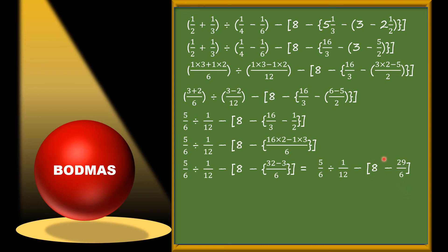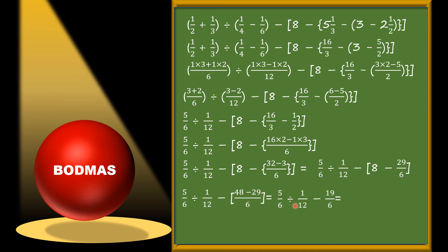Now only the big bracket remains. We need to subtract a fraction from a whole number — 8 minus 29/6. The LCM is 6, so we get (8×6 − 29)/6 = (48 − 29)/6. Our expression becomes: 5/6 ÷ 1/12 as it is, minus 19/6.